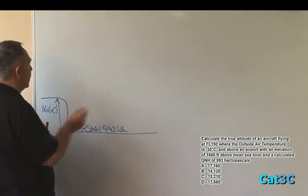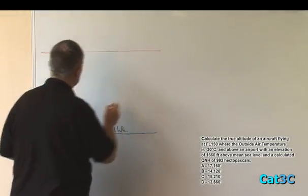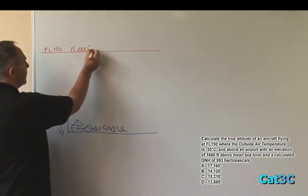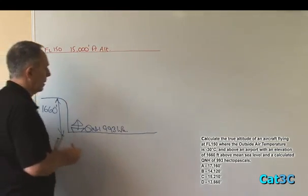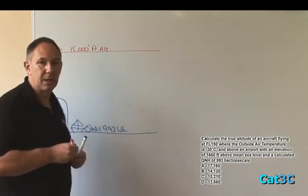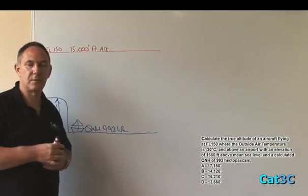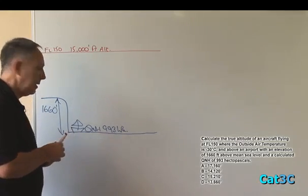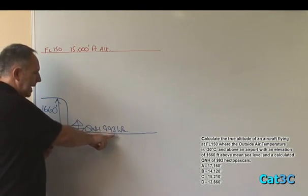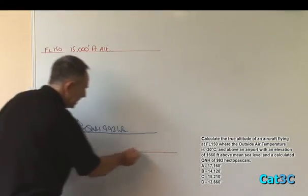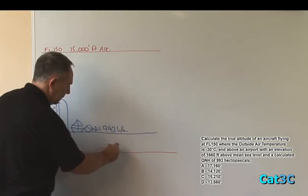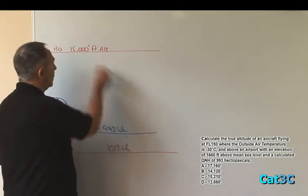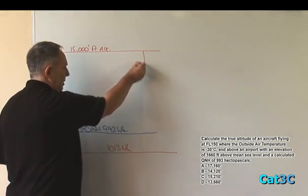We also know that the aircraft is at flight level 150, which is a pressure altitude of 15,000 feet. However, the pressure altitude is not measured from sea level. It's measured from the standard pressure datum of 1013 or 1013 hectopascals. Being a larger number than 993, it's a heavier mass of air and therefore the 1013 datum will be lower. This means that the 15,000 feet pressure altitude is measured from this point.